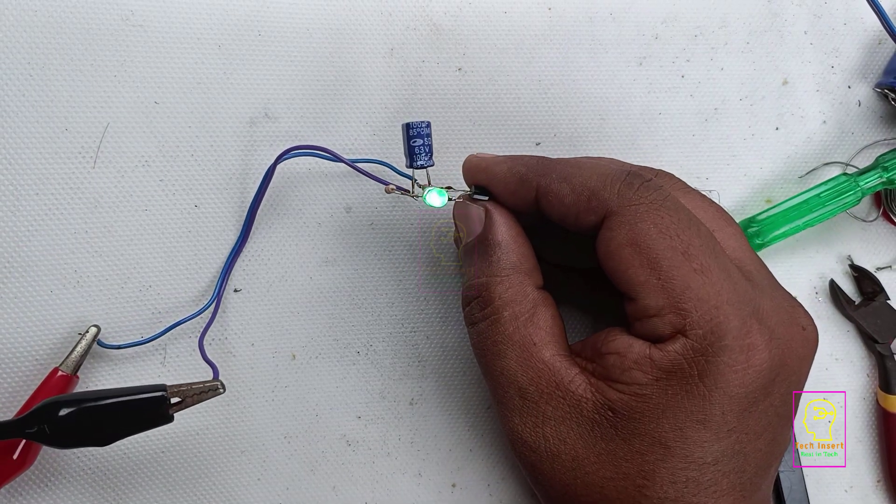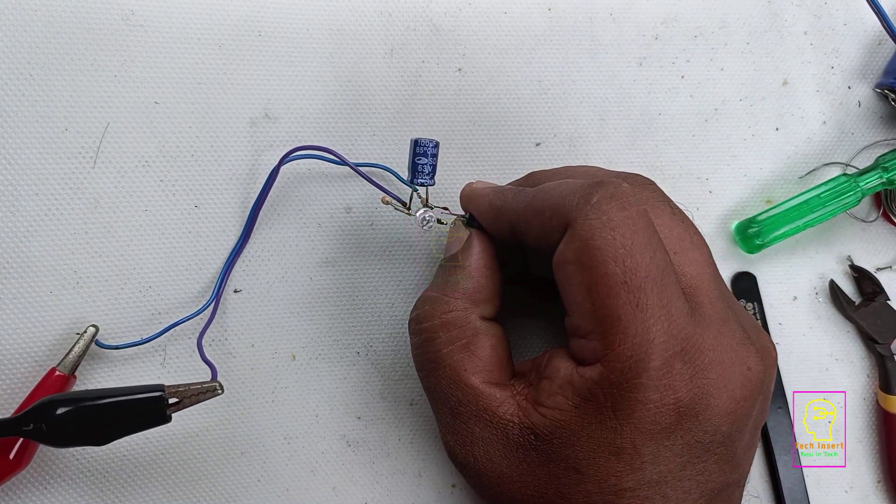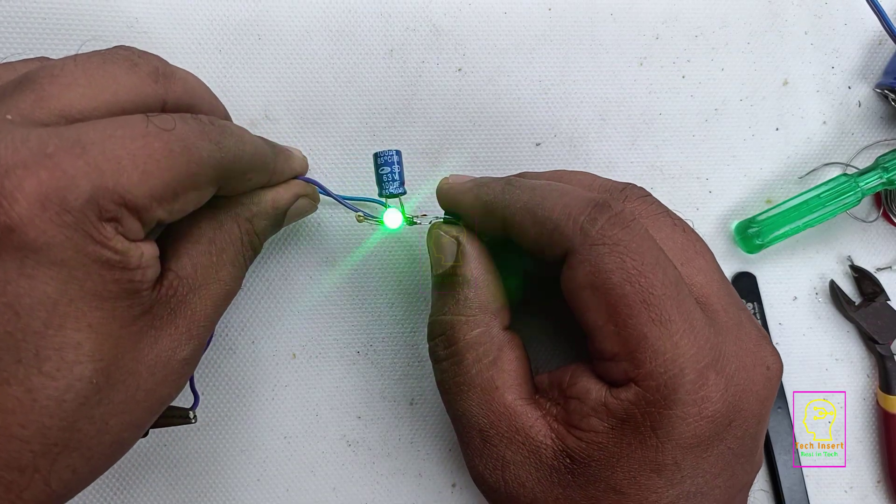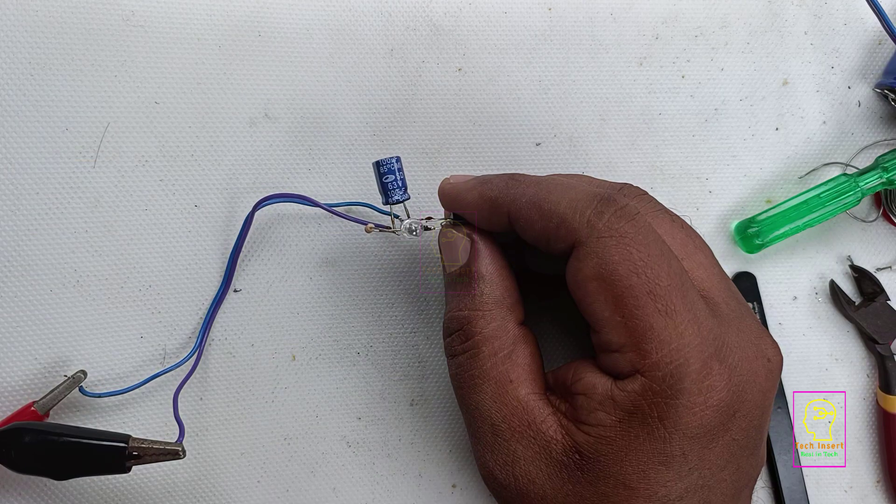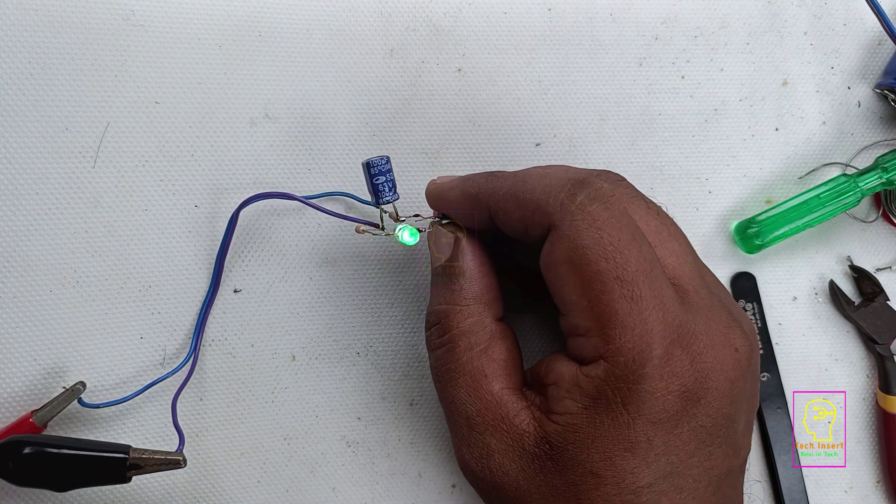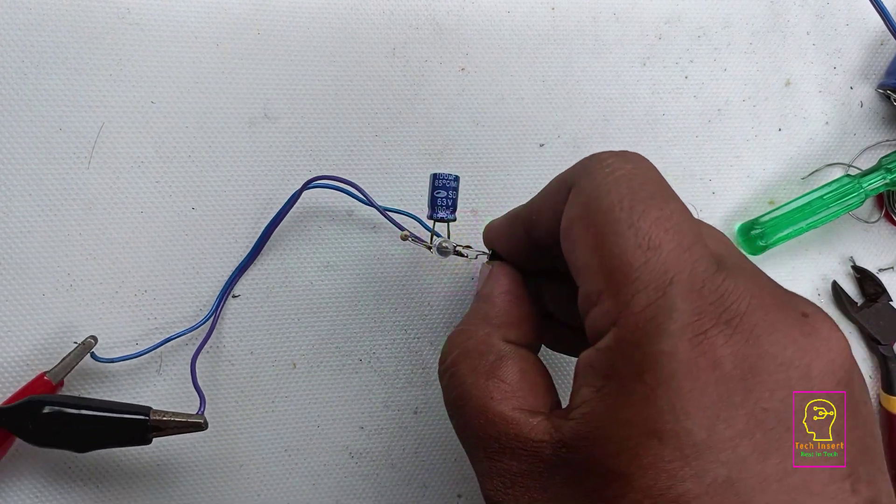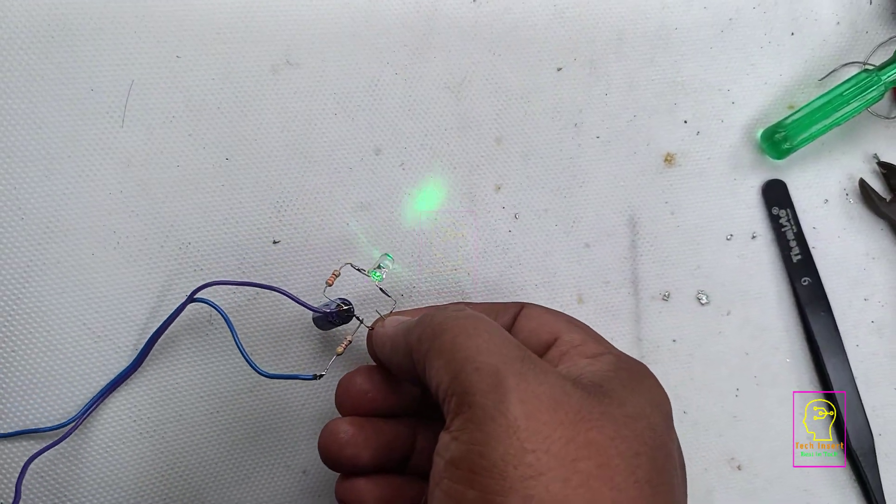The flashing rate is a bit high because we are using only 100 microfarad capacitor and the studio is having very high brightness. That is why the brightness of the LED seems not good. But I will switch off the studio light and will show you how much brightness the LED is having.